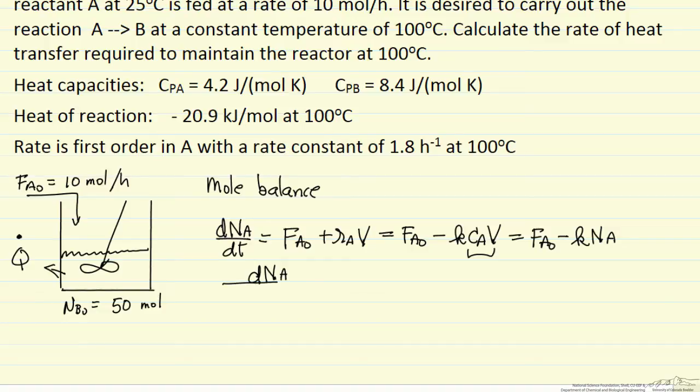So change in number of moles, FA0 minus K in A is equal to DT. So we integrate from 0 to some time, we integrate from 0 because initially there are no moles of A in the reactor, into the number of moles of A at time T.